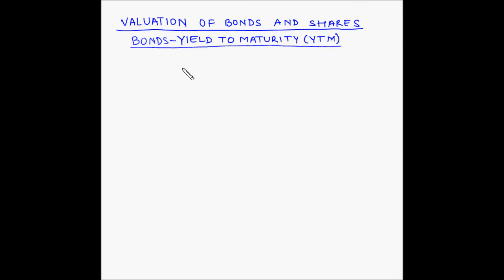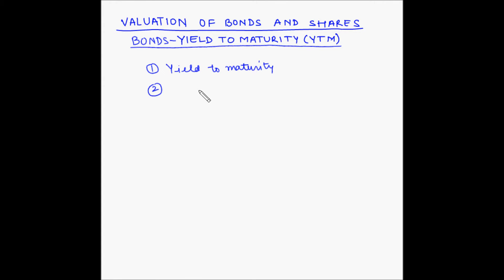Welcome to another video for valuation of bonds and shares. In this video we'll understand the concepts of yield to maturity for a bond. The yield of a bond can be calculated in three different ways: yield to maturity, yield to call, and current yield. In this video we'll focus on yield to maturity.